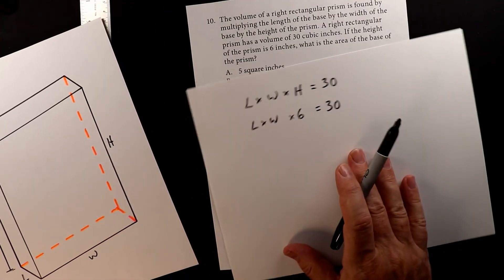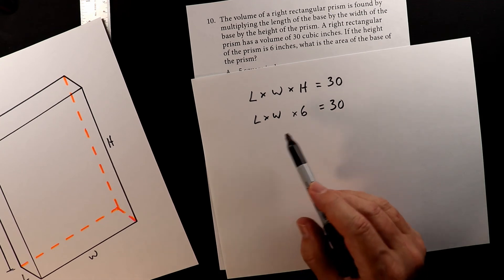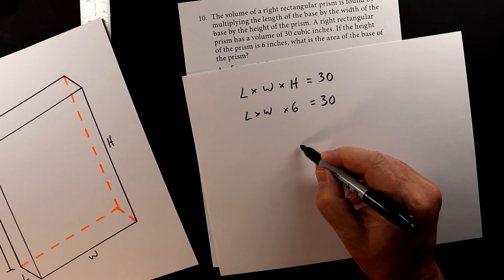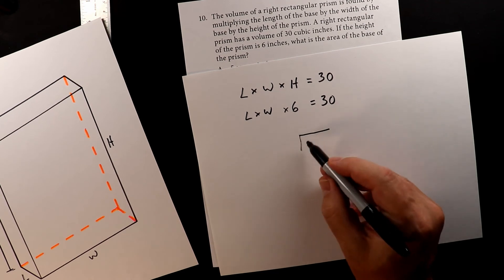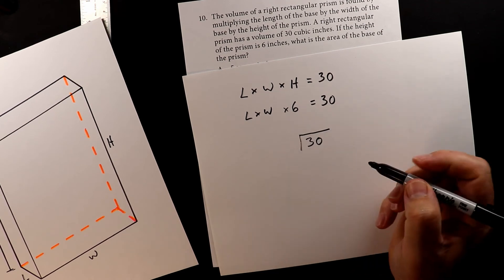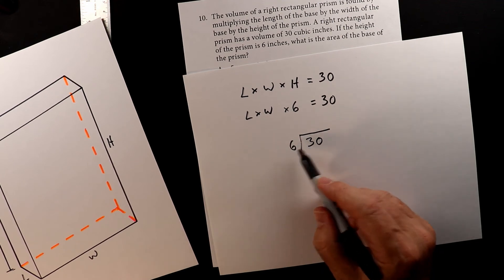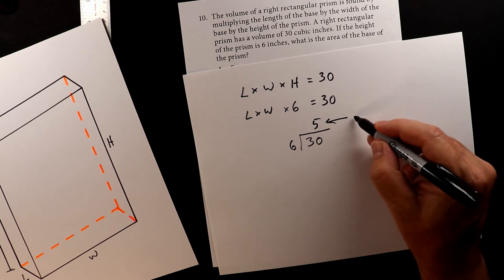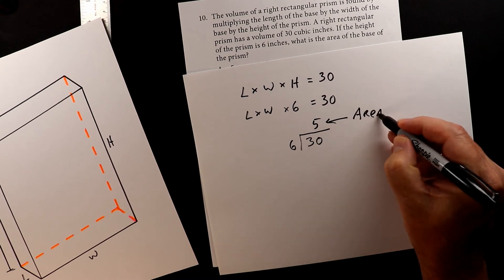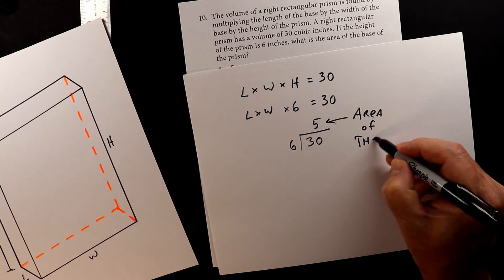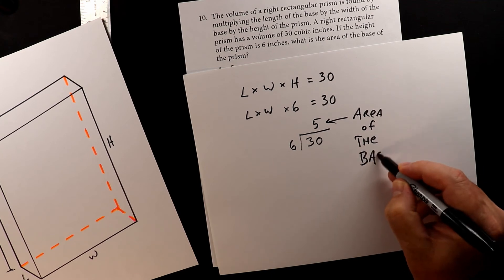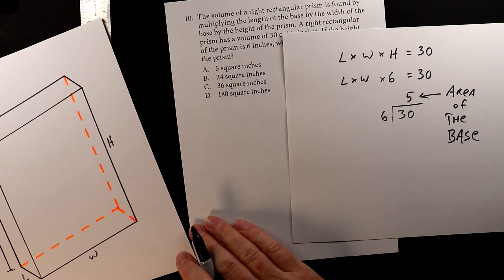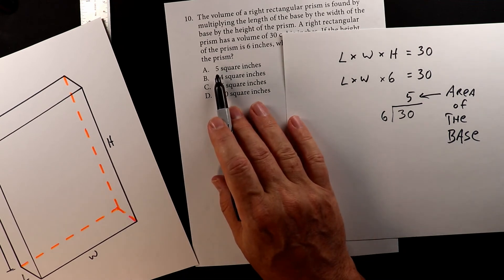So all we have to do is we have to find the number that we can multiply six by to get to 30. And to do that, it's just straight division. So we take 30, it goes in the house, and then the six goes out. Six goes into 30 five times. Five is the area, area of the base. And if we look over here, we have five square inches.